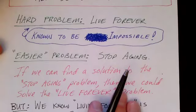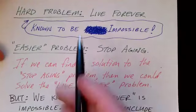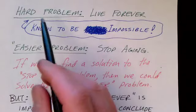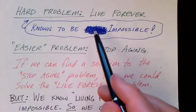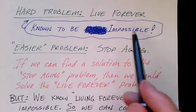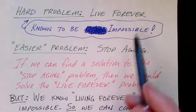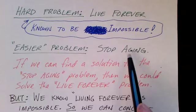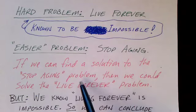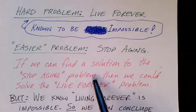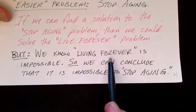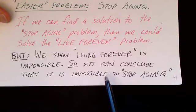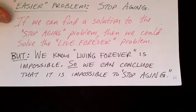Here's an informal example of the reverse logic — it's not a perfect example, but maybe it'll give you the idea of what's going on. Let's assume that the hard problem is to live forever, which we somehow know a priori to be impossible. The easier problem might be to stop aging. If we could find a solution to the stop aging problem — if we could figure out how to stop aging — then we could solve the live forever problem. But since we know that living forever is impossible, we can conclude that it's impossible to stop aging.